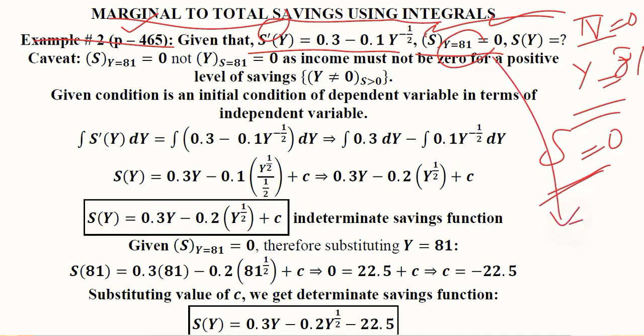That level in this case is 81. This is the economic background of why the initial condition is reversed from what it usually is. Now this is the savings function that we need to estimate and calculate.